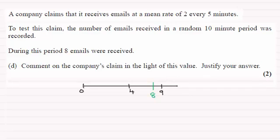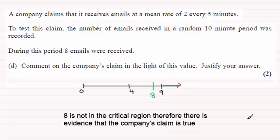Here is the critical region out here, greater than or equal to 9. And so what we can say is that in the light of this, 8 is not in the critical region therefore there is evidence that the company's claim is true.